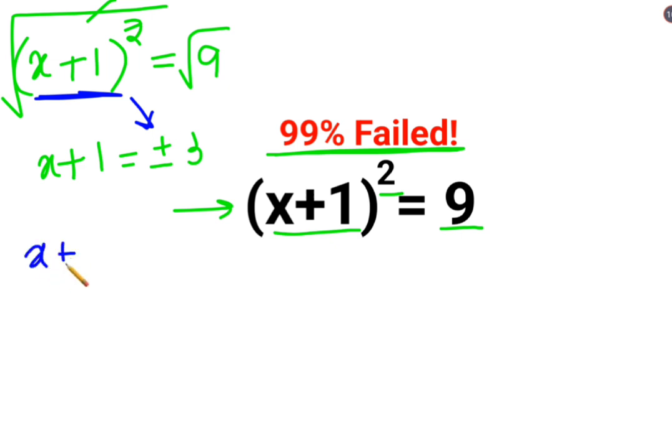So we will have x+1 = 3, or x+1 = -3. Subtracting 1 on both sides, we are left with x = 2.